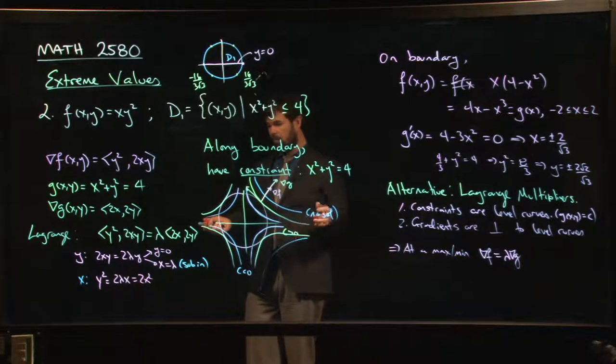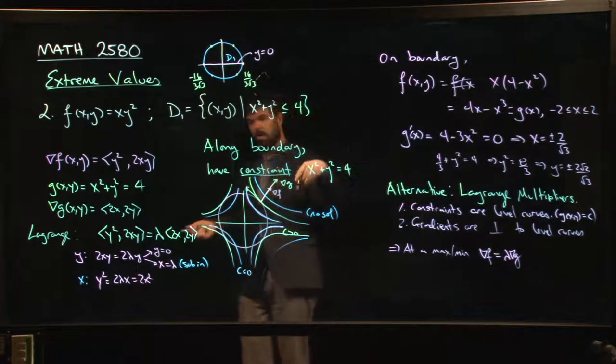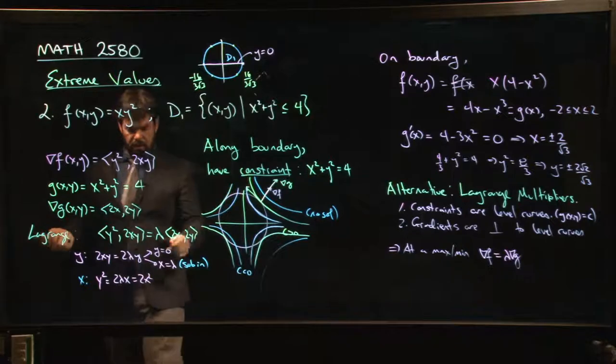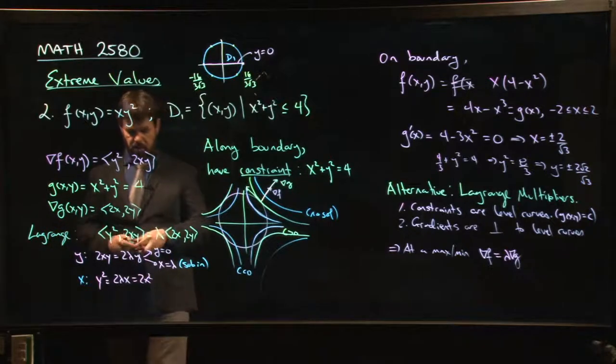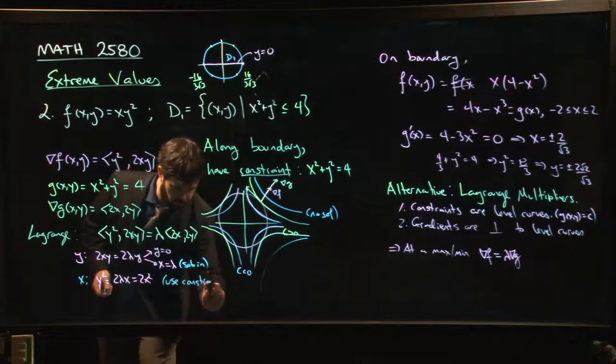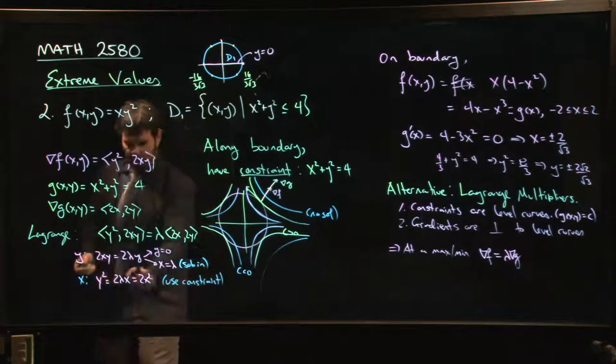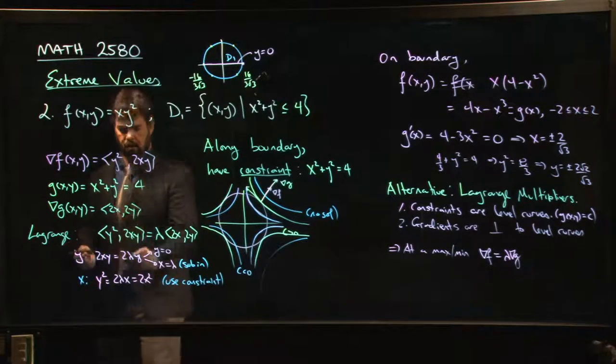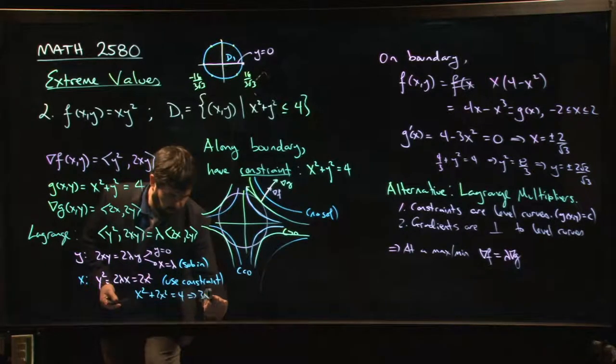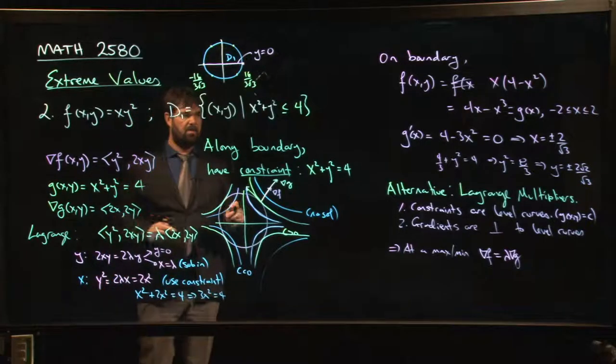Or what I could do is, I could sub it in again. And now what I do is, I go back and I use my constraint. So I take y squared equals 2x squared. I plug that into my constraint. x squared plus 2x squared equals 4. So 3x squared equals 4. And from here, it's the same algebra as before.